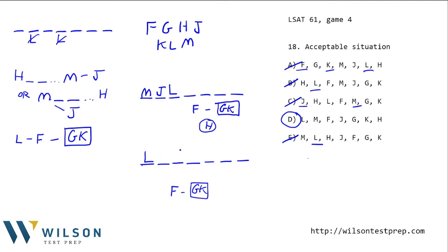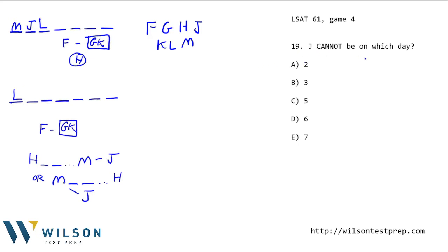Going forward, we know it's either going to start with M, J, L or start with L. That will help us answer the questions. Question 19 asks on which day J cannot appear. J on the second day is one possibility, so that's fine. If J is on the third day, we're not in the MJL scenario, so L has to be first. We could then have M here and H over there, with F, G, K — so the third day is okay.